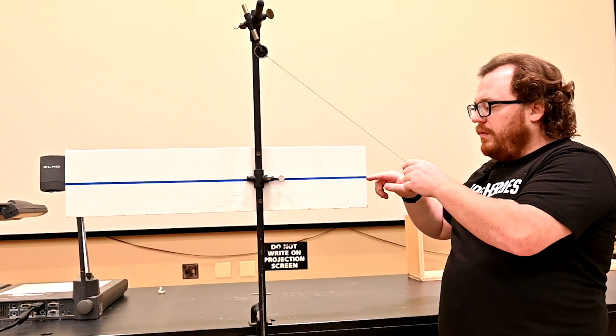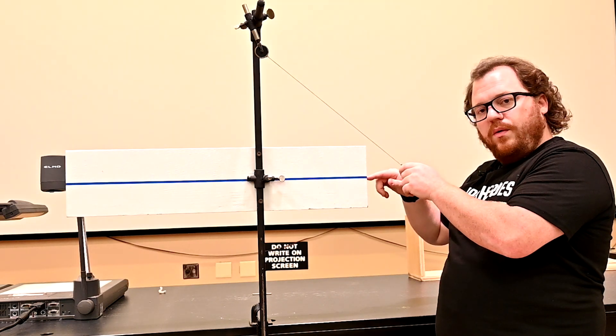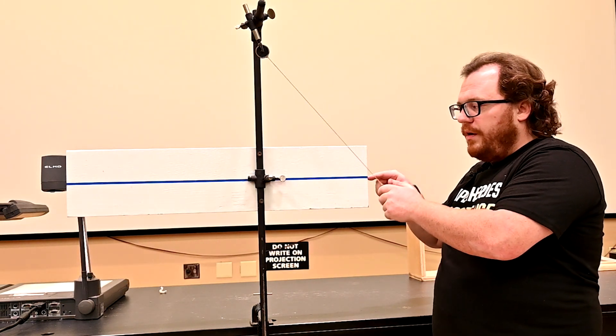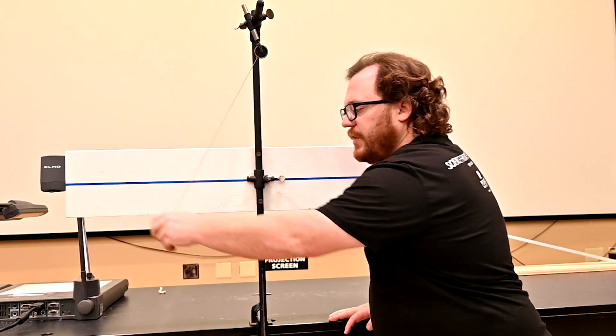We know that without the bar, if I let this go, then it should swing to the height of the blue line on the other side.